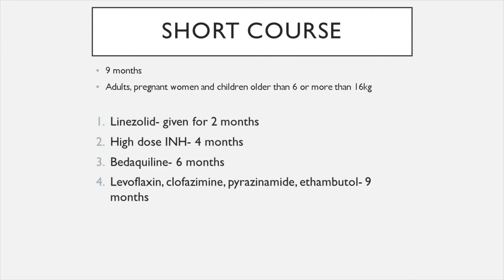For drug-resistant TB, you can be put on the short course or the long course. The short course is nine months and is for adults, pregnant women, and children older than six and weighing more than 16 kilograms. You'll be given linezolid for two months, a high dose of isoniazid for four months, bedaquiline for six months, and levofloxacin, clofazimine, pyrazinamide, and ethambutol for nine months.